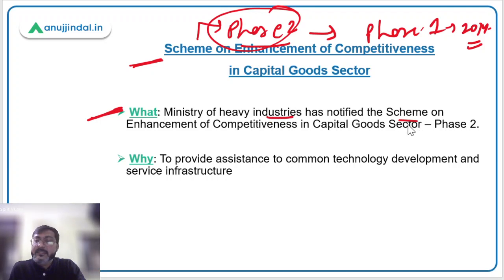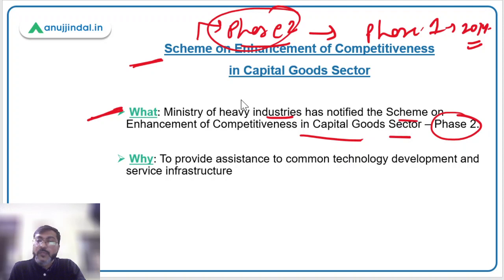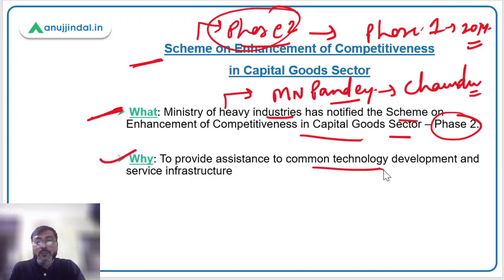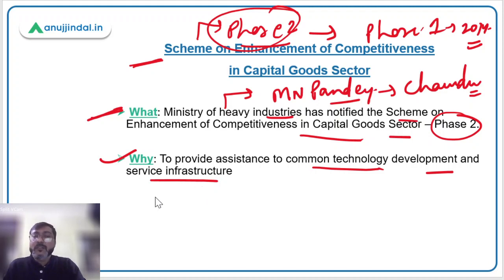The Ministry of Heavy Industries has notified the Scheme on Enhancement of Competitiveness in Capital Goods Sector Phase 2. The Minister of Heavy Industry is Mr. Mahindranath Pande, whose Lok Sabha constituency is Chandauli, which is in Uttar Pradesh. The scheme has the objective to provide assistance to common technology development and service infrastructure.